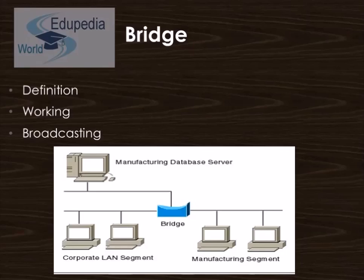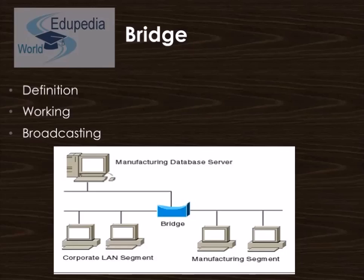Bridging networks are generally always interconnected local area networks, since broadcasting every message to all possible destinations would flood a large network with unnecessary traffic. For this reason, routers are preferred over bridges so that packets can be forwarded only in one general direction rather than in all directions. As you can see from the figure, a database server is connected through different local area networks, all connected through a bridge to broadcast messages from one LAN to another, all using the same network topology named Ethernet.